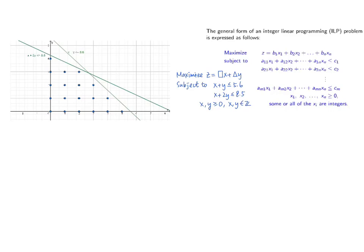After we have drawn the inequalities on the graph, we will only consider points which satisfy these inequalities and at the same time both their x and y coordinates are non-negative integers. The blue dots highlighted in the graph show all the points that satisfy these conditions.